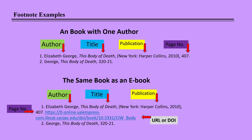Book and ebook citations are very similar. Notice that the second and subsequent citations of electronic items do not require the URL or DOI, as those have already been included in the initial citation of the item.